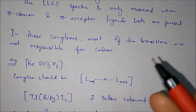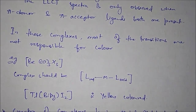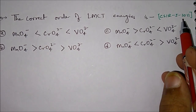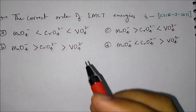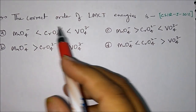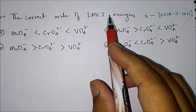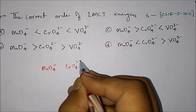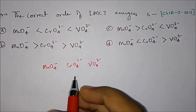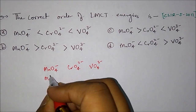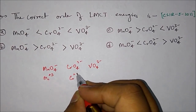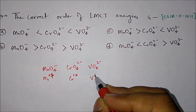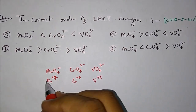Let's take a few questions which were asked in previous CSIR exams. This question was asked in CSIR June 2011. The question says: the correct order of ligand to metal charge transfer energy is, and you have four complexes - MnO₄⁻, CrO₄²⁻, and VO₄³⁻. If you calculate the oxidation states: Mn is in plus seven, chromium is in plus six, and vanadium is in plus five oxidation state.